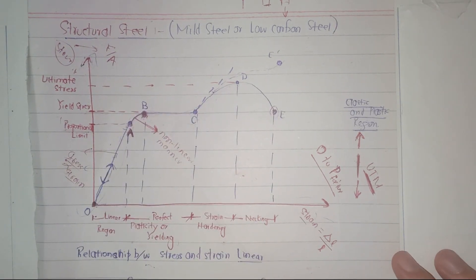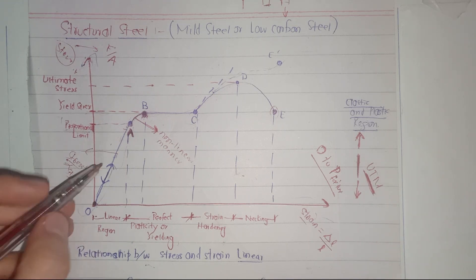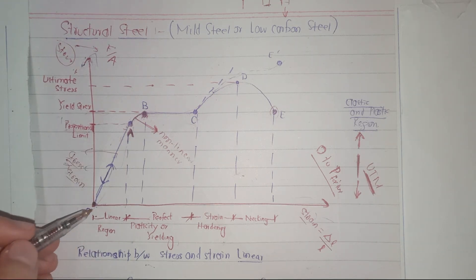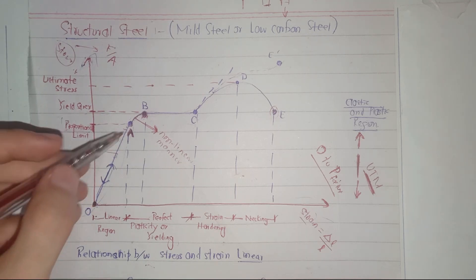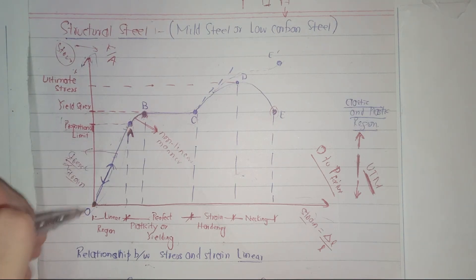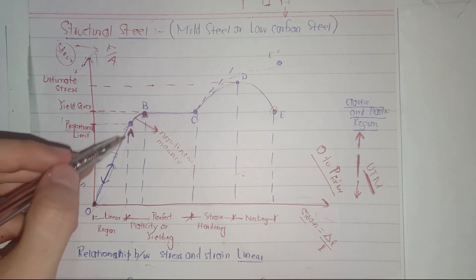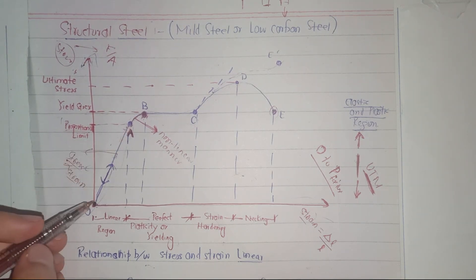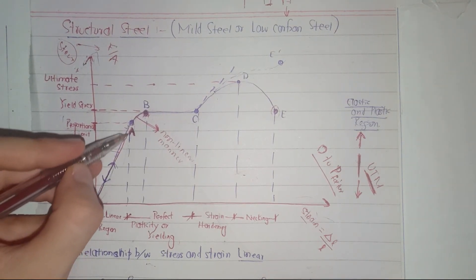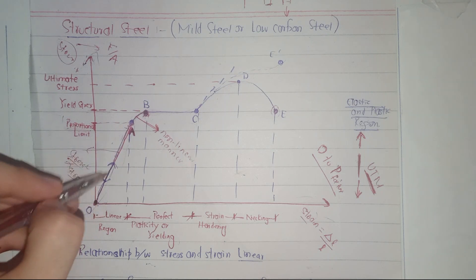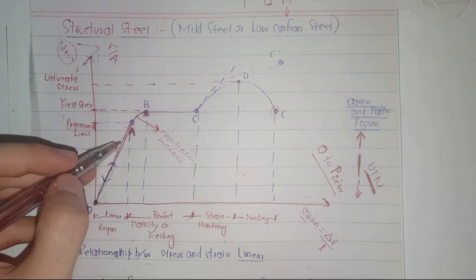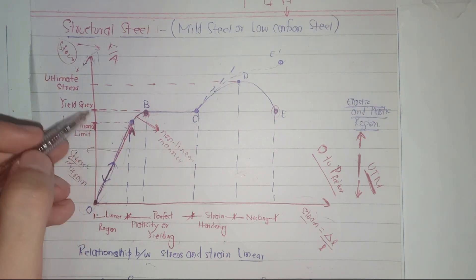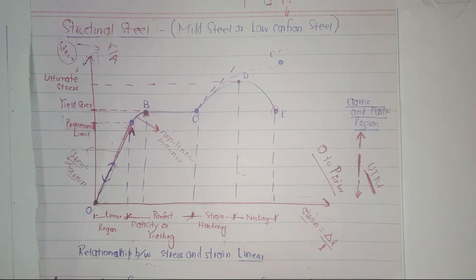If you want to find the modulus of elasticity of structural steel, the slope of the line from 0 to A gives you the modulus of elasticity. If you calculate the slope of this line, you are going to obtain the modulus of elasticity of structural steel.